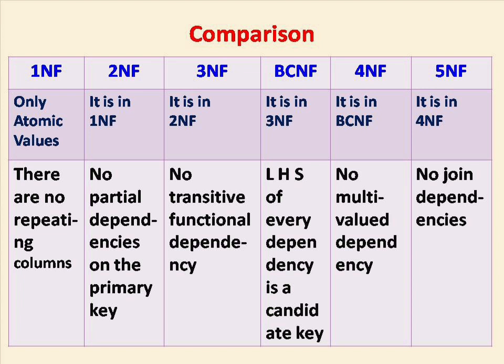Third normal form deals with transitive dependency. If A determines B, and B determines C, then A determines C. We can derive A to C, and this transitive dependency must be removed.